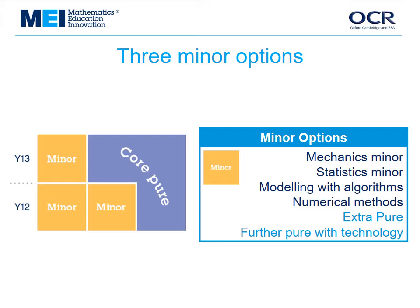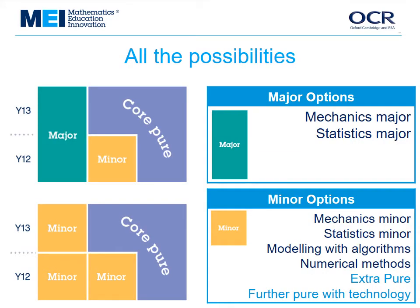Here are all the choices if you want to take three options: you just choose three from the list. You probably wouldn't choose both of the last two because they're best taught in Year 13, but it is permitted. All the possibilities are shown in one diagram, which you can download as a PDF from the MEI Further Maths webpage.